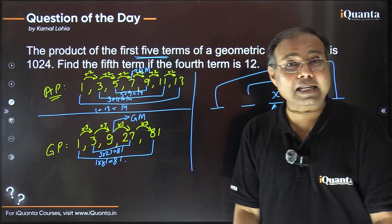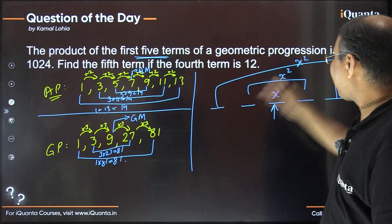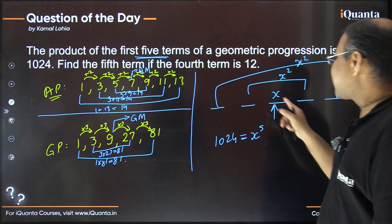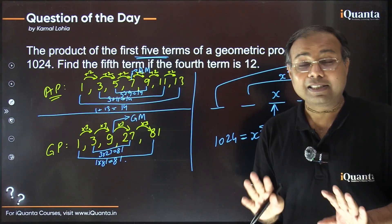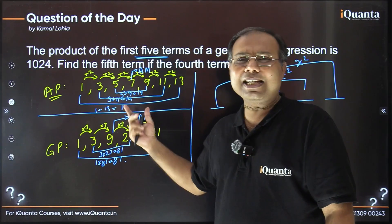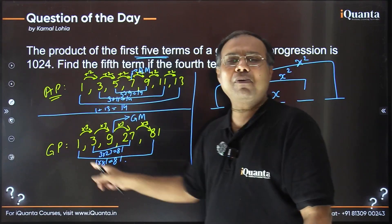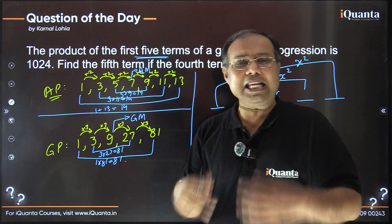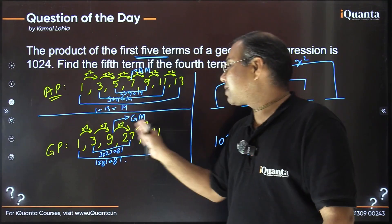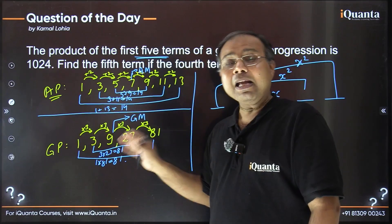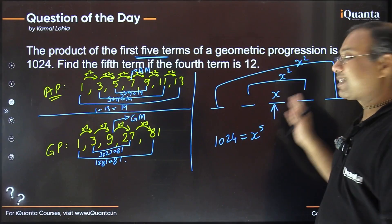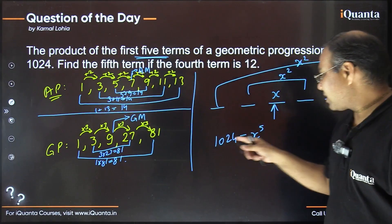That's what we just discussed. 1024 is the product of all five. If we replace all terms with the middle value x, the product remains the same — just as in our example where 1×81 = 3×27 = 9 squared. So making all terms equal to x, each pair's product stays the same. Therefore x^5 = 1024.